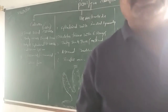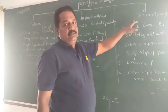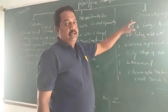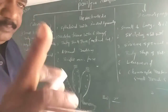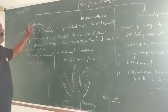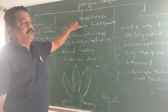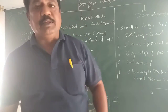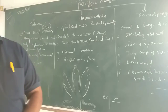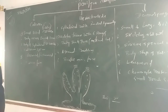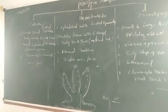The third one is Demospongiae. In Demospongiae, the spicules are made by silica or spongin fibers. So on the basis of the endoskeleton and the nature of the spicules: Calcarea — spicules made by calcium carbonate; Hexactinellida — spicules made by silica; Demospongiae — spicules generally absent or made by silica or spongin fibers.